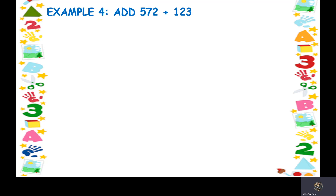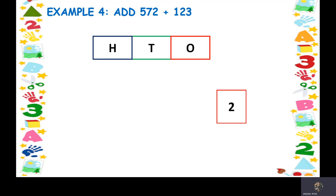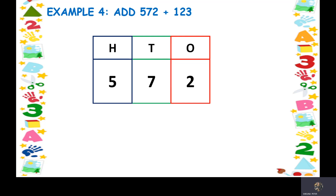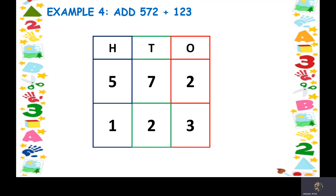Now let's take the last example: add 572 and 123. Write the place values — ones, tens, and hundreds. Then write 2, 7, and 5 for 572. Write the next number — 3, 2, and 1 for 123. Now let's add these numbers starting from the ones place. We have 2 and 3 — keep 2 in your mind, take out 3 fingers and count forward — so we get 3, 4, and 5. In the tens column, keep 7 in your mind, take out 2 fingers and count forward — so we get 8 and 9.